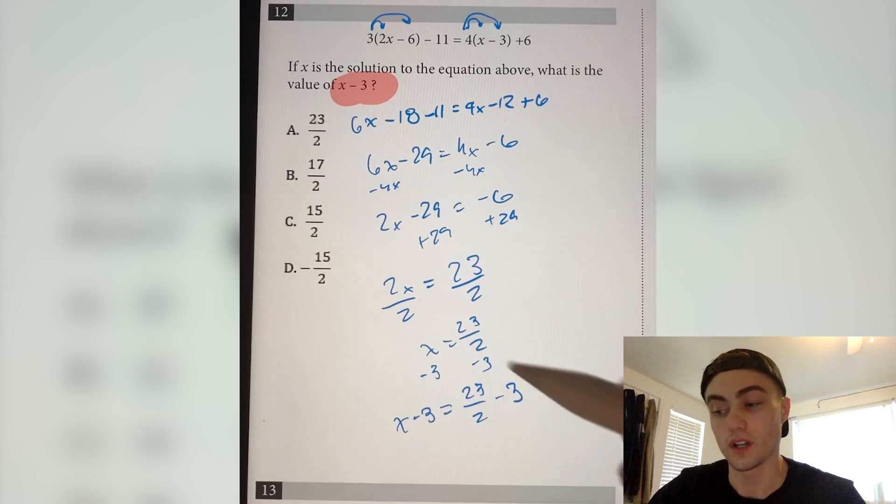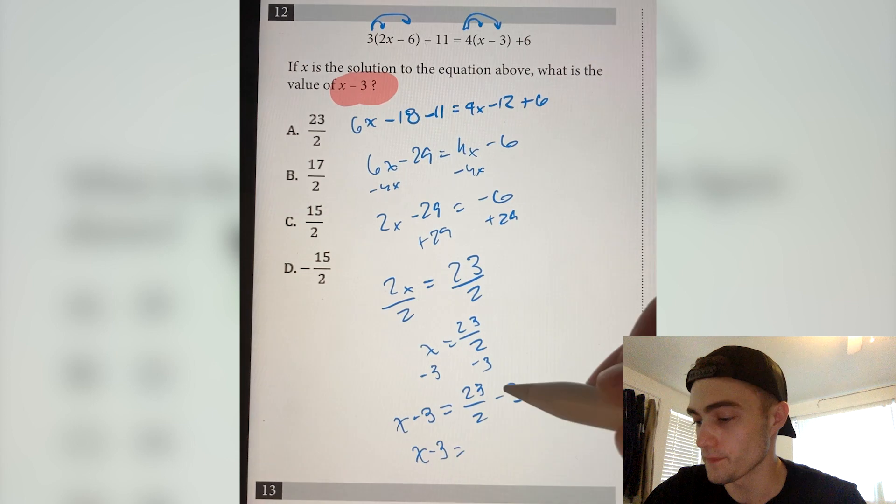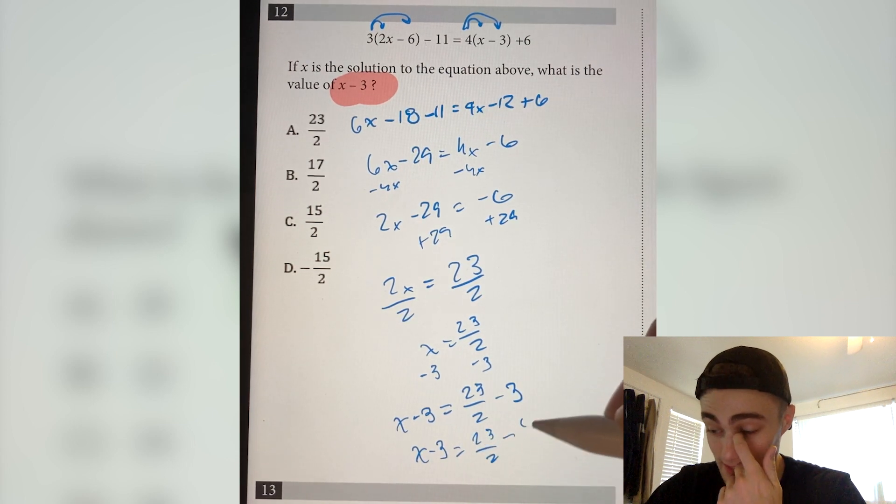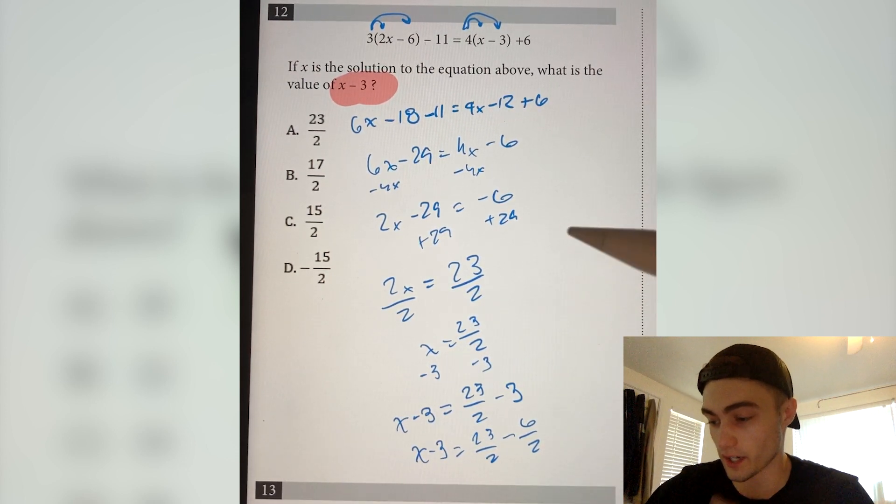I can simplify this now. So x minus 3 is on this side, and then I'm going to rewrite minus 3 as minus 6 over 2. So if you divide 6 over 2, you get 3, so everything checks out.